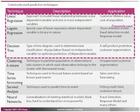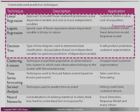Linear regression is when your dependent variable is a continuous variable — like customer lifetime value or cost of acquisition — and your approach is to find a linear relationship between the independent variables and what you're trying to predict. Logistic regression is a special case of linear regression where the dependent variable is a 0 or 1 — like churn: is this person going to churn or not?